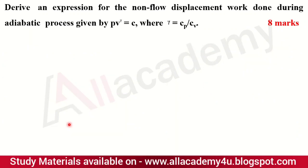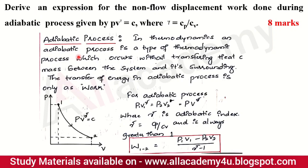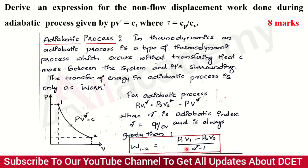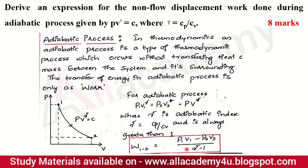The next question is: derive the expression for the non-flow displacement work done during the adiabatic process, where PV raised to gamma equals constant, and gamma equals Cp by Cv. Explain what the adiabatic process is, draw the PV diagram, then derive the equation. Importantly, if the question asks for the polytropic process instead of adiabatic, the derivation is completely the same — just replace gamma with n, where n is the polytropic index.